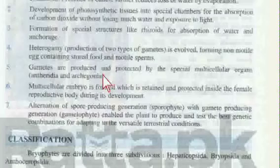Gametes are produced and protected by special multicellular organs called antheridia and archegonia. So whenever a question asks about the multicellular organs involved in gamete production in bryophytes, the answer is antheridia and archegonia.